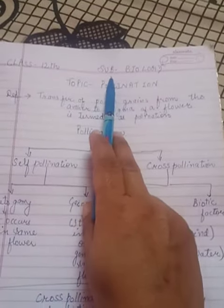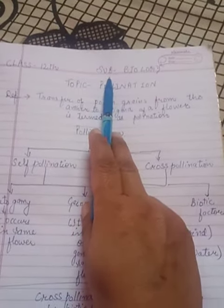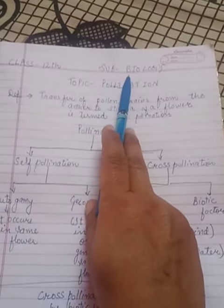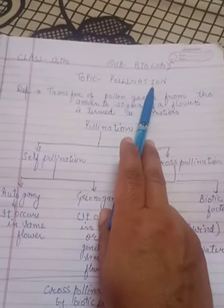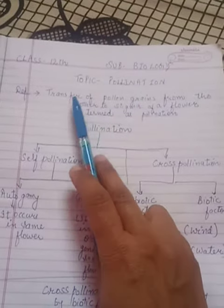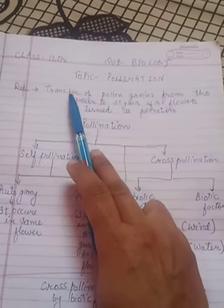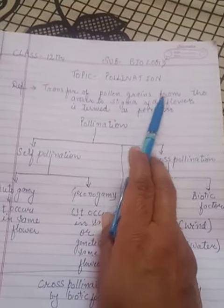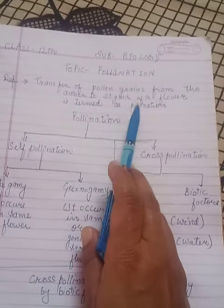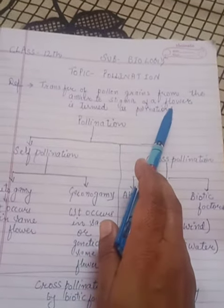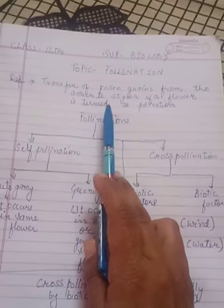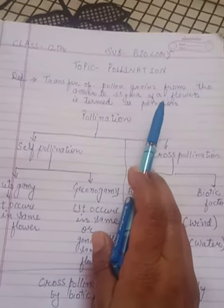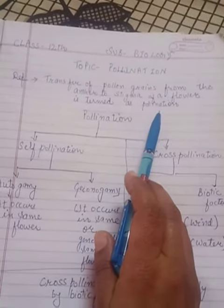Good morning students. Today we will discuss about the topic pollination. What is pollination? Transfer of pollen grain from the anther to the stigma of a same flower or different flower is termed as pollination.